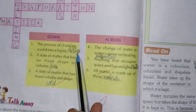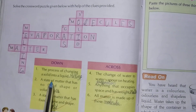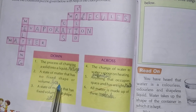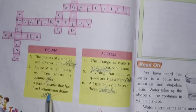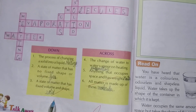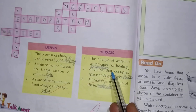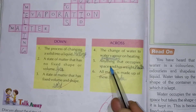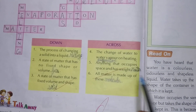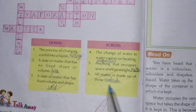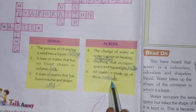Crossword puzzle. The process of changing a solid into liquid is called melting. State of matter that has no fixed shape or volume — gas. State of matter that has fixed volume and shape — solid. The change of water to water vapor on heating — evaporation. Anything that occupies space and has weight — matter. All matter is made up of — molecules.